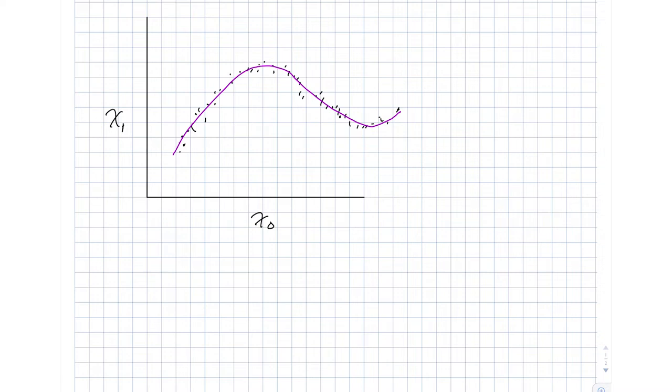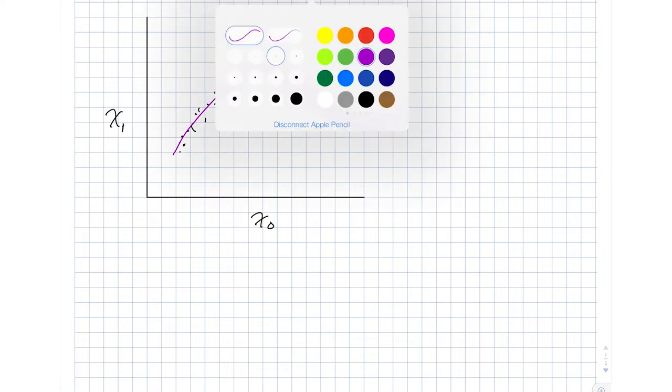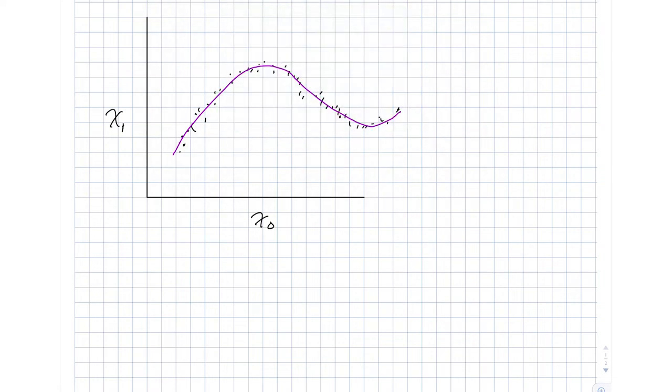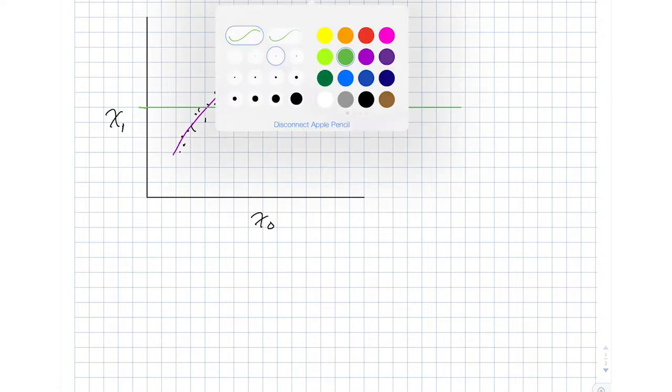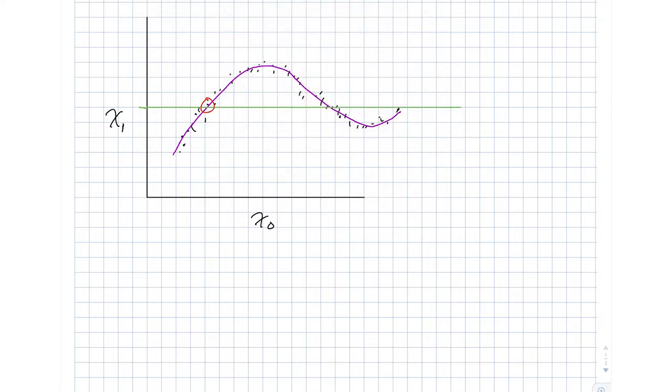Something else that has happened in this particular manifold is that we no longer have a one-to-one relationship between x0 and x1. So in particular, if we look at a value of x1 right here, if I draw a line across here, we've got two different places or maybe even three different places where we cross the manifold.